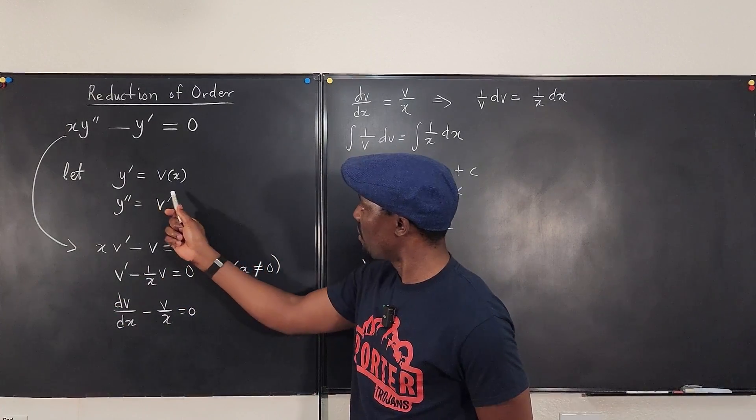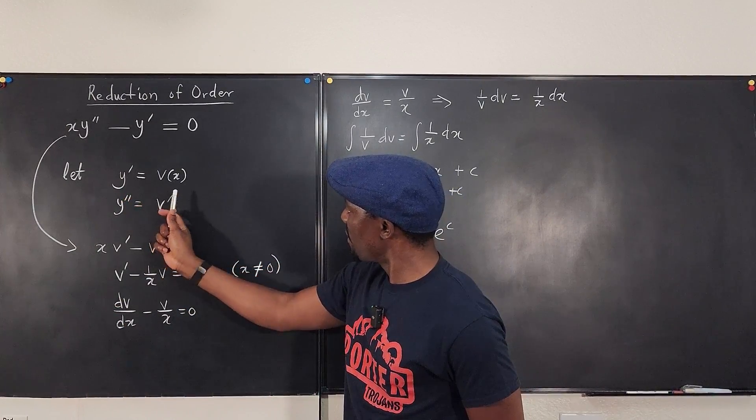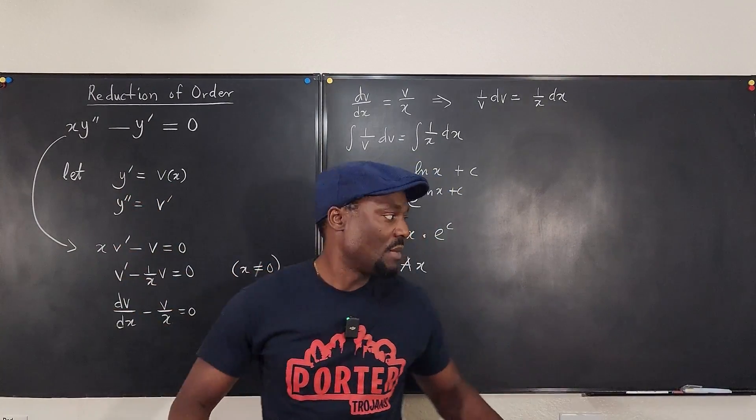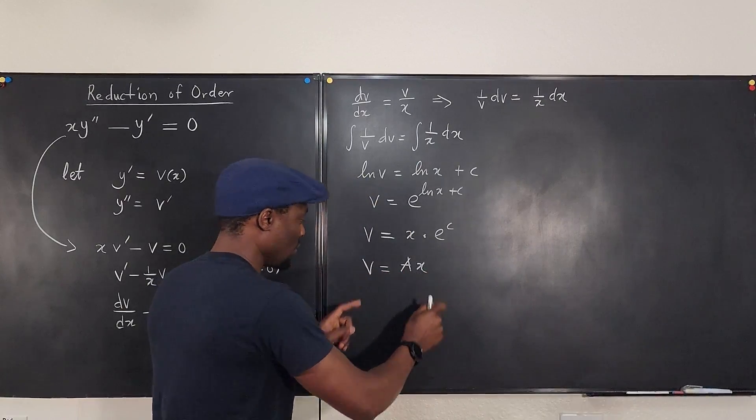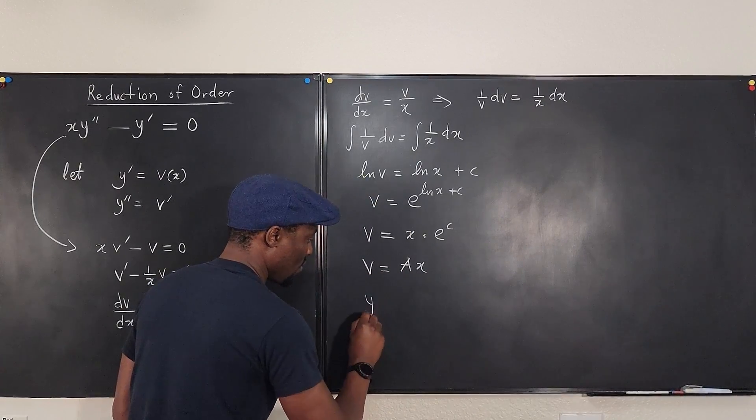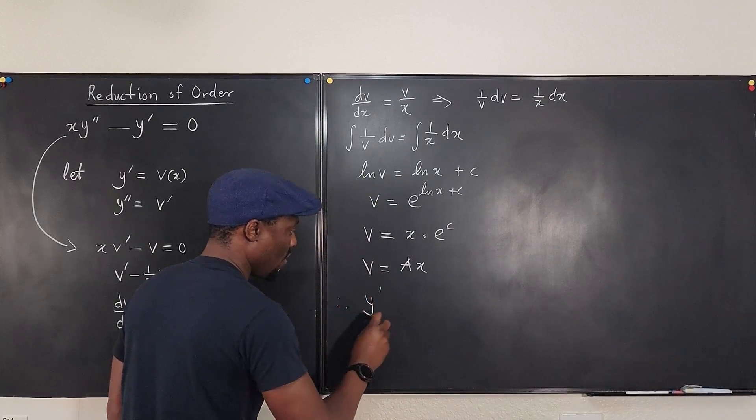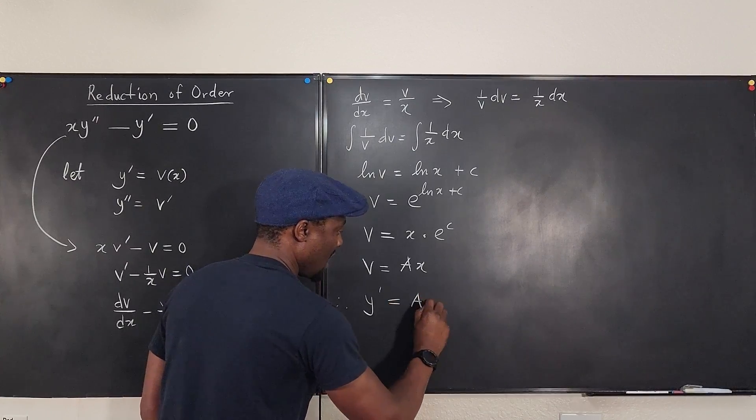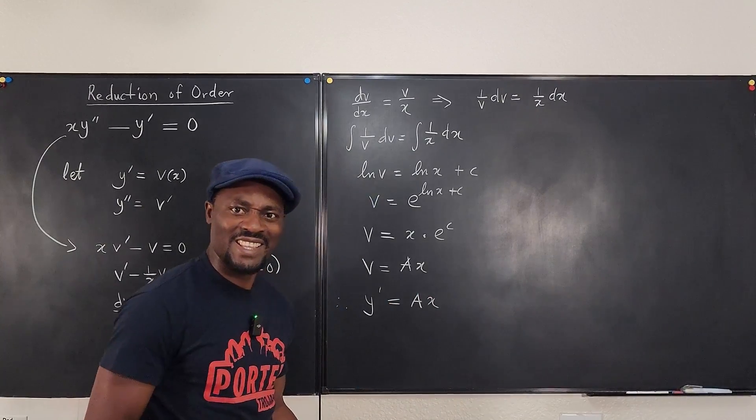And remember what we said v was, v was a function of x and it was y prime. So this is our y prime. So we can clearly say that y prime, therefore, y prime equals ax. Can you see how easy that is?